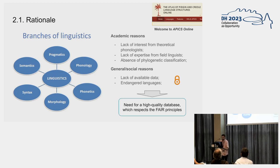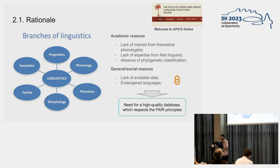Diving into the project, there are several academic reasons that led to the formation of this database. Although there was already a database on creole language structures — APICS, hosted by the Max Planck Institute — of 120-something features, only seven features are phonological. So we thought that phonology should have a little more attention. Moreover, theoretical phonologists are not normally interested in describing these languages. The linguists that go to the field are not phonologists; normally they are specialists in semantics or syntax. And these languages lack phylogenetic classification, which is a problem.